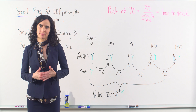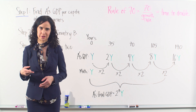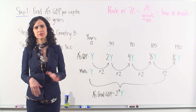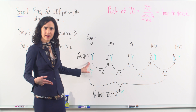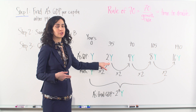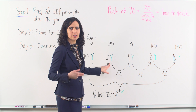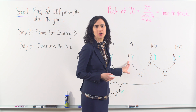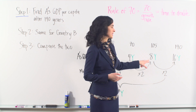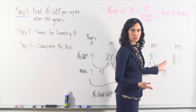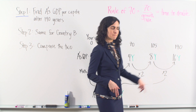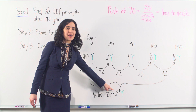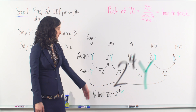We know country A's real GDP per capita will double four times over the course of 140 years, but we don't actually know country A's initial GDP value. So for simplicity, let's just call it Y. After 35 years, Y doubles to 2Y. After another 35 years, 2Y doubles yet again to 4Y. And so on: 4Y doubles to 8Y, and 8Y doubles to 16Y at the end of 140 years. This process of multiplying by 2 every 35 years can be mathematically simplified to 2 to the fourth, so our final answer is 2 to the fourth times Y.